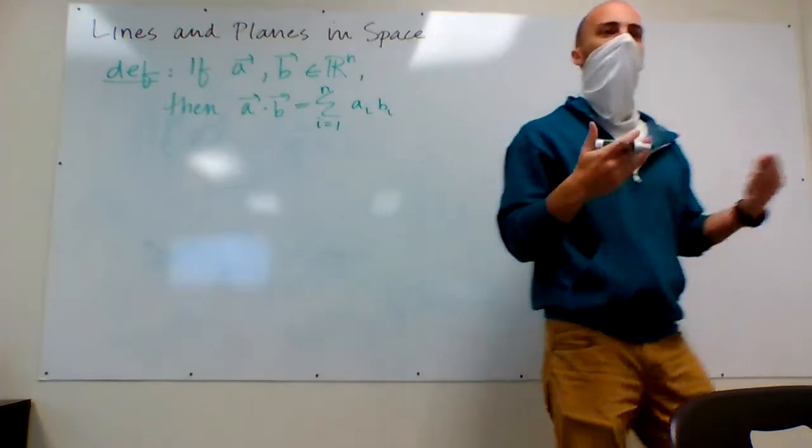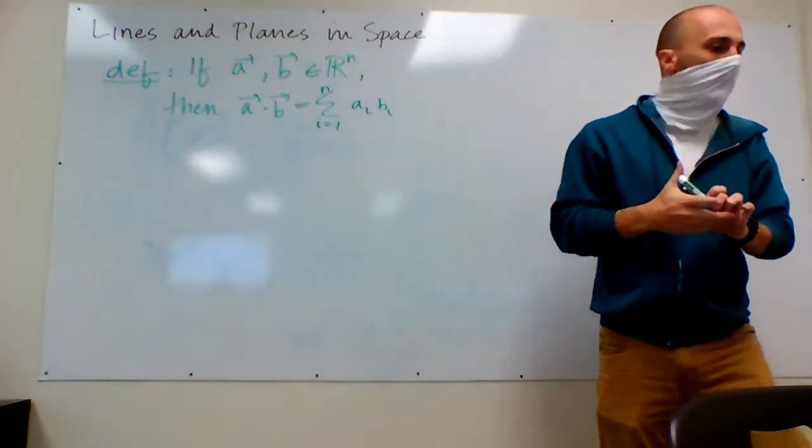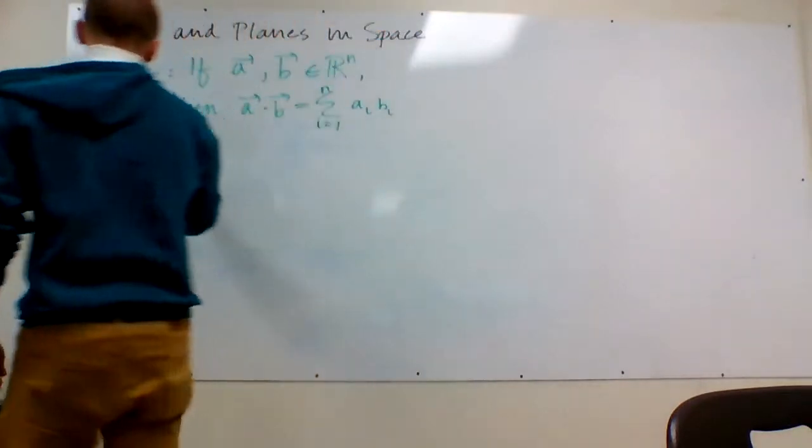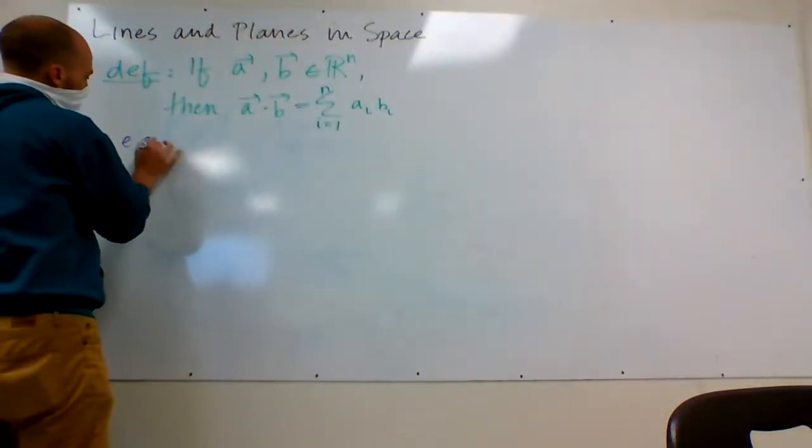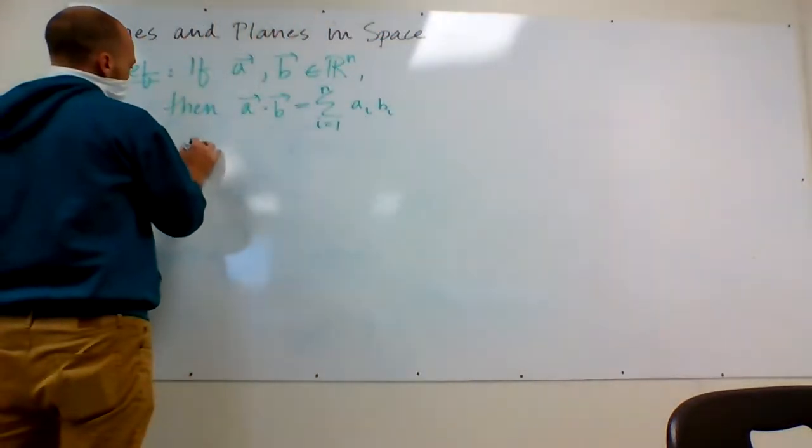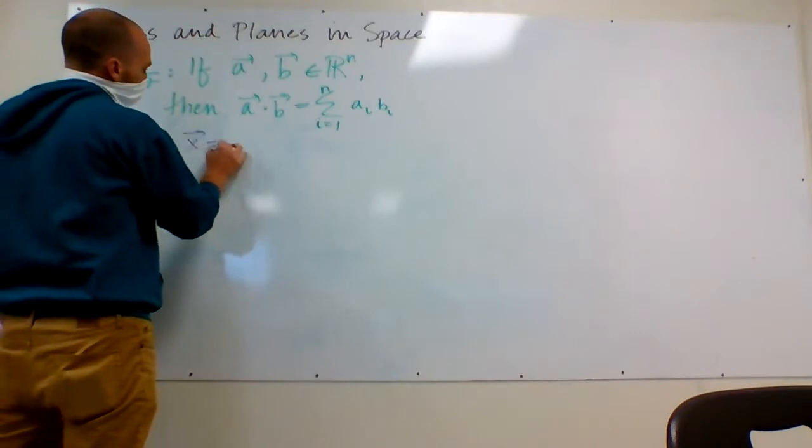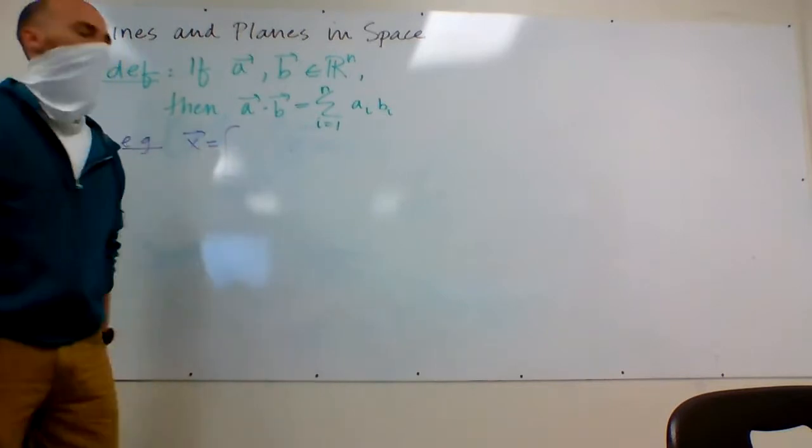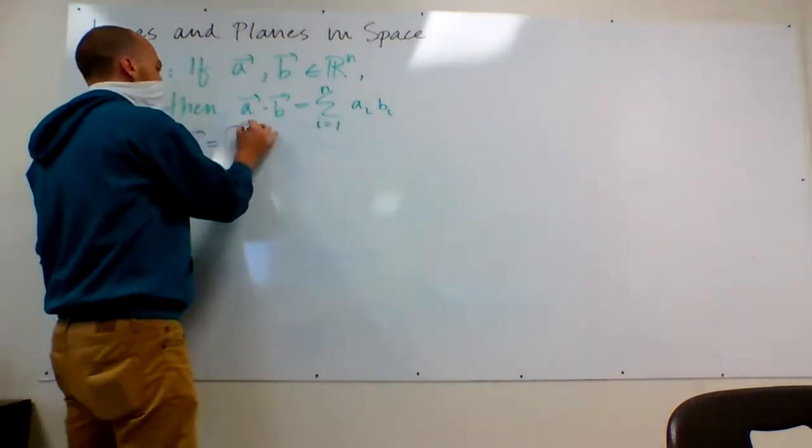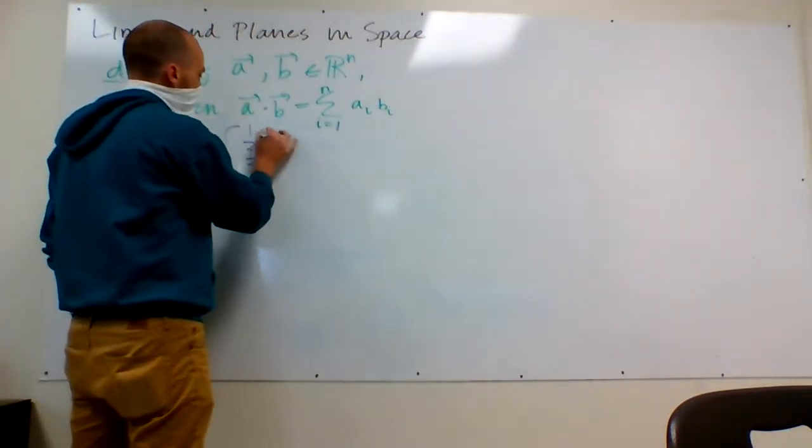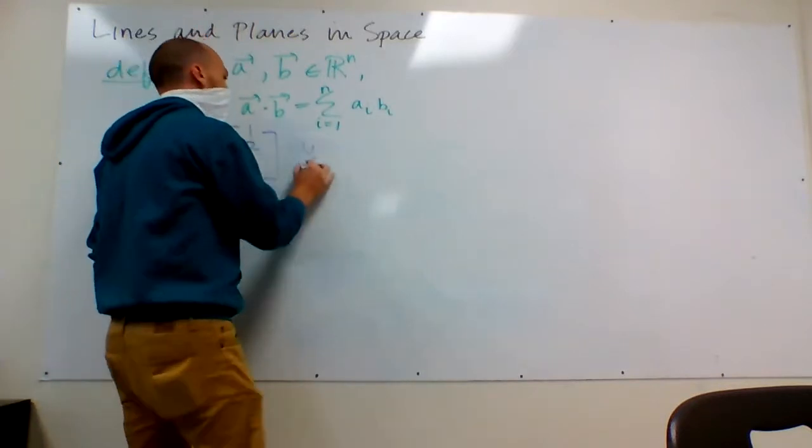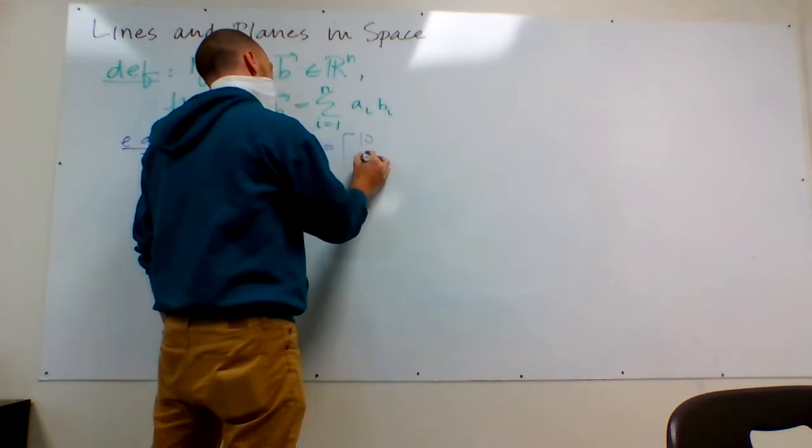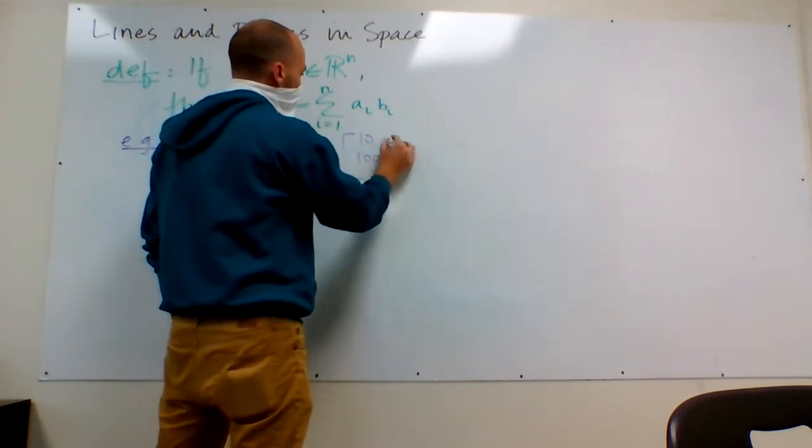So I'll just do a little quick example for you. If X is equal to, and I will continue probably to write these vectors vertically because that's just my preferred way. If I say X is 1, 2, 3, and Y is 10, 100, and negative 1.